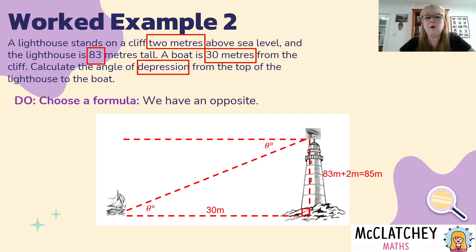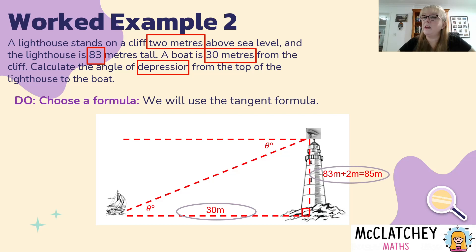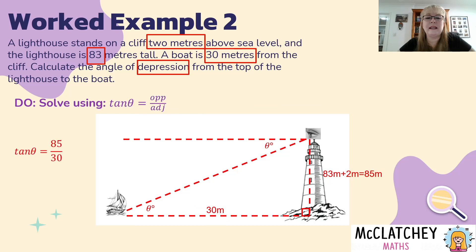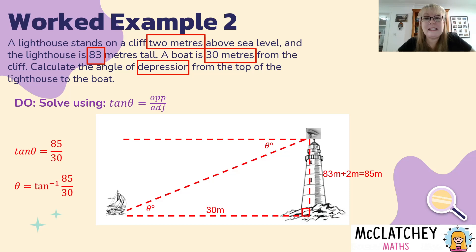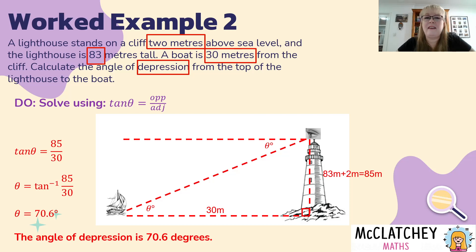Now we choose a formula. We've got an opposite — the height of the lighthouse and cliff, 85 meters — and an adjacent of 30 meters, so we're going to use the tangent formula again. tan(θ) = 85 / 30. To get theta by itself we find the inverse of tan: press shift and then the tan button on your calculator, enter 85 divided by 30, and you get the angle of depression is 70.6 degrees. It's always important to write a statement at the end because you don't see theta in the question — you have to answer word problems with statements.